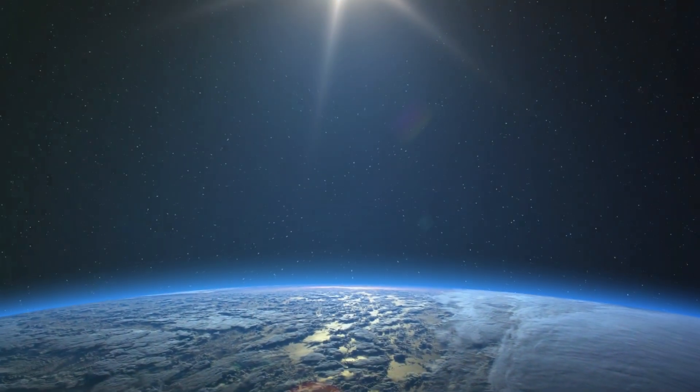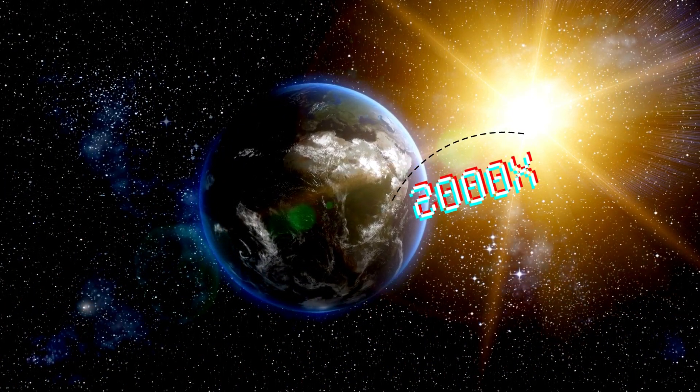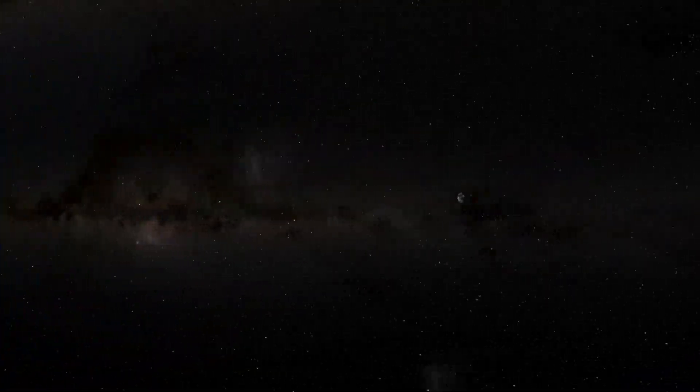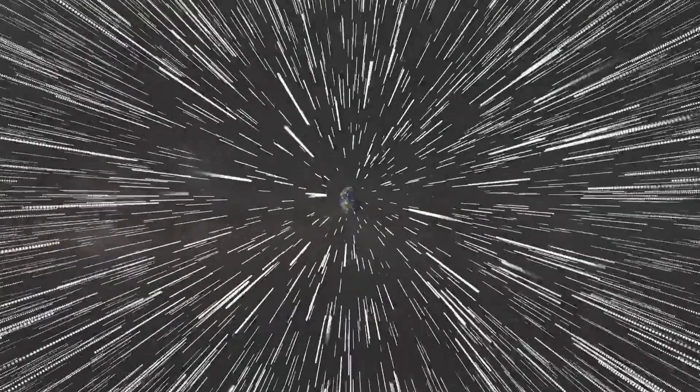Fascinatingly, this exoplanet is located 2,000 times the distance between Earth and the Sun, or 2,000 astronomical units away from its star. In comparison, Neptune, which is the farthest planet from the Sun, is 30 astronomical units away from the Sun.